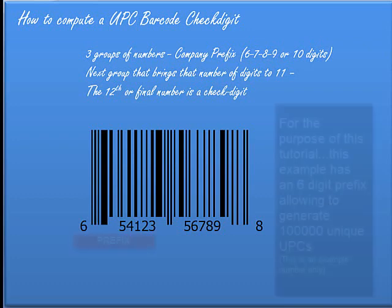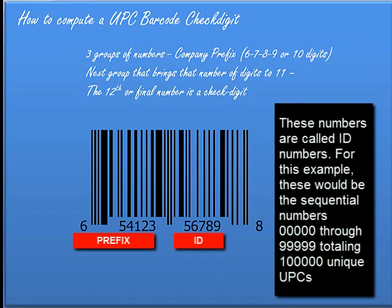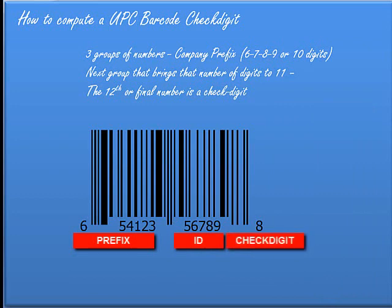First, there are three groups of numbers. There's the company prefix, which is the first six, seven, eight, nine, even ten digits. The next group of numbers brings the total digit count to eleven. So if it's a ten-digit prefix, it's going to be a single number; if it's a six-digit prefix, it's going to be the next five. The twelfth or final number is a check digit.